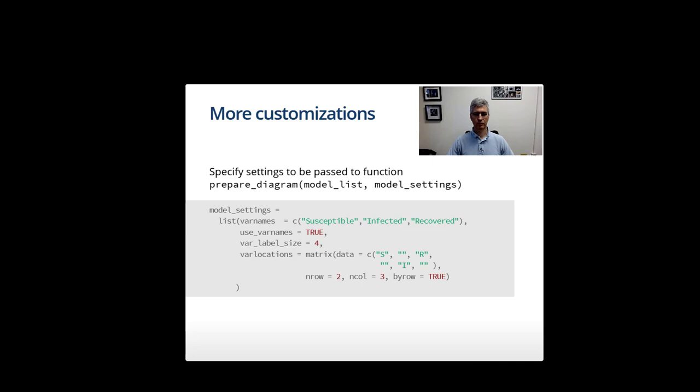A very important one is this matrix var_locations. With this you can arrange the boxes, the variables, on a grid. For a simple diagram if you don't specify anything they are just applied left to right. That might work for the SIR diagram, but if you have more complex ones you want to align them in a specific way.